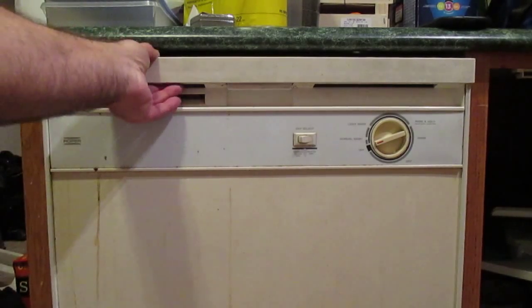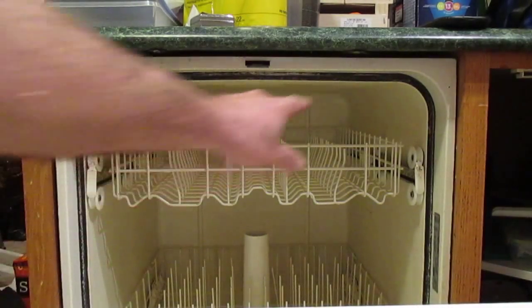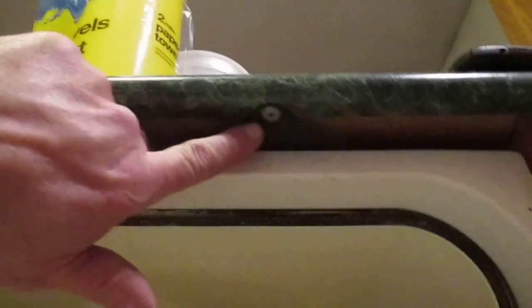To get at the screws to keep the dishwasher in place, open up the front door. And we're going to look up here. In the case of this dishwasher, two screws. One there. And we'll go a little further. And one there. Phillips head in this case.